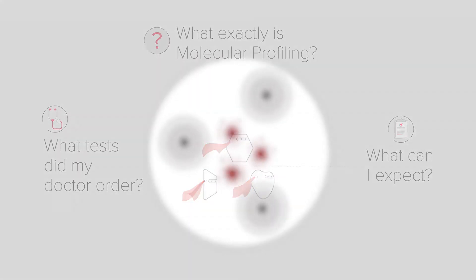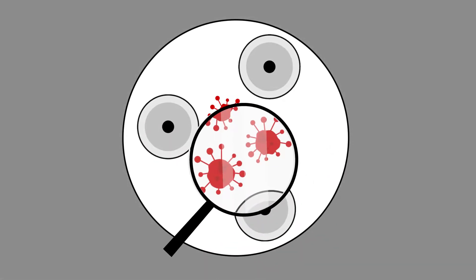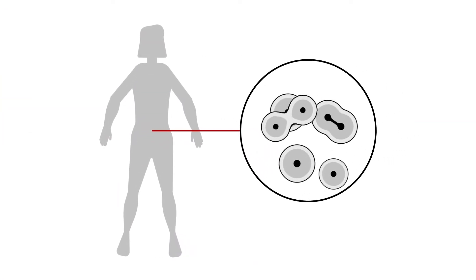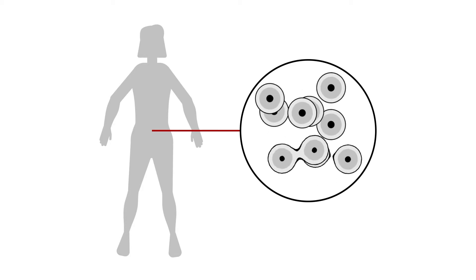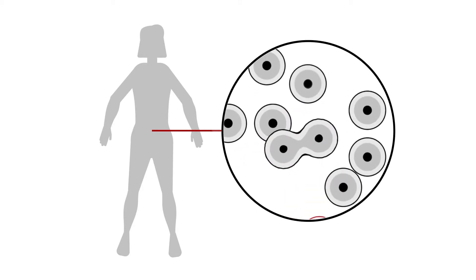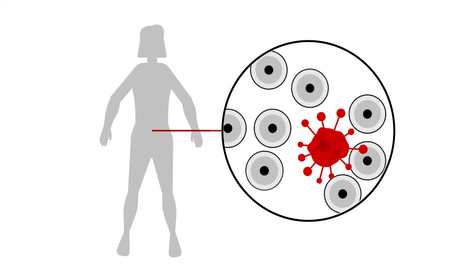But to answer these questions properly, you really have to understand how cancer works. See, your body is made of trillions of cells. Healthy cells typically grow and divide to form new cells. When old or damaged cells die, new cells take their place. But if those cells mutate, they can behave very differently.